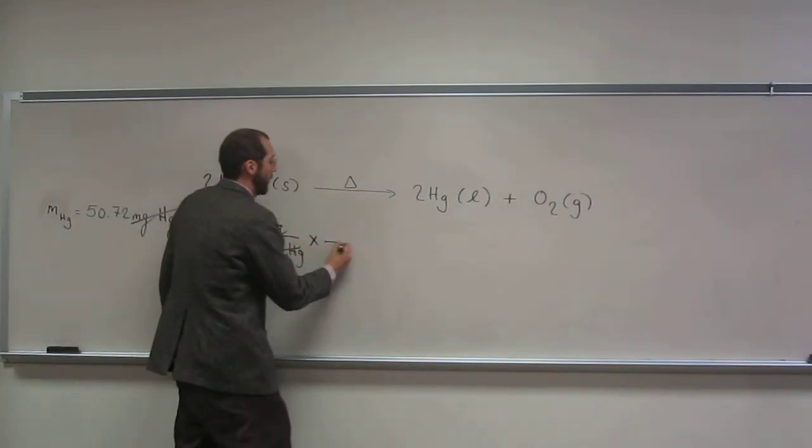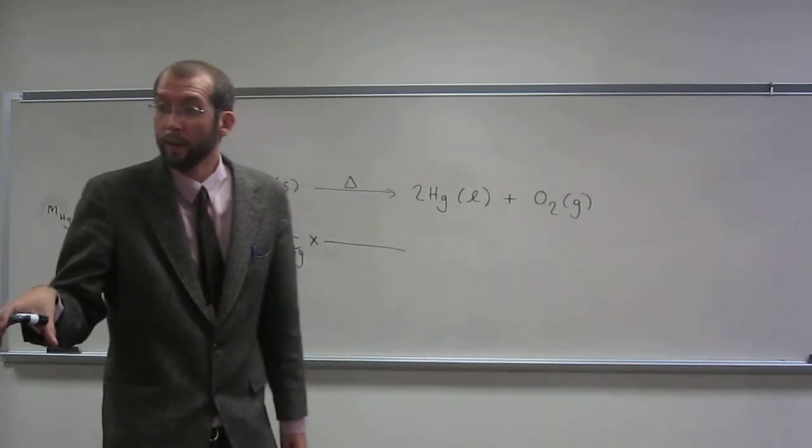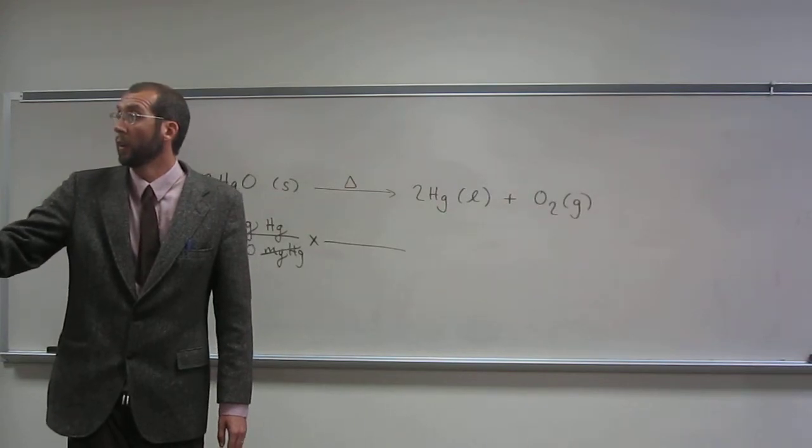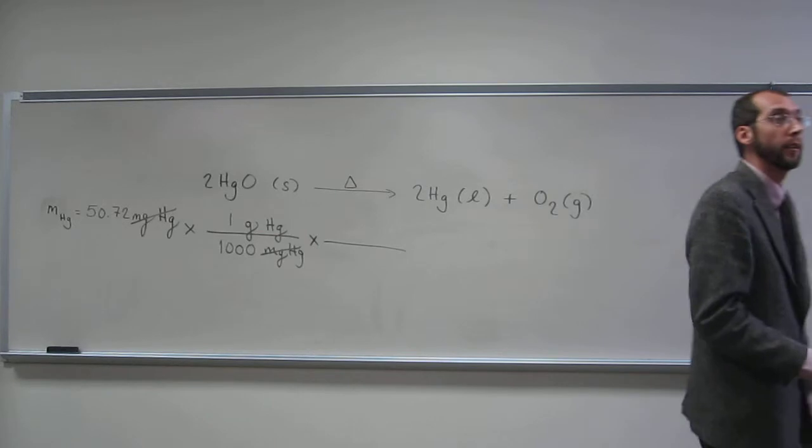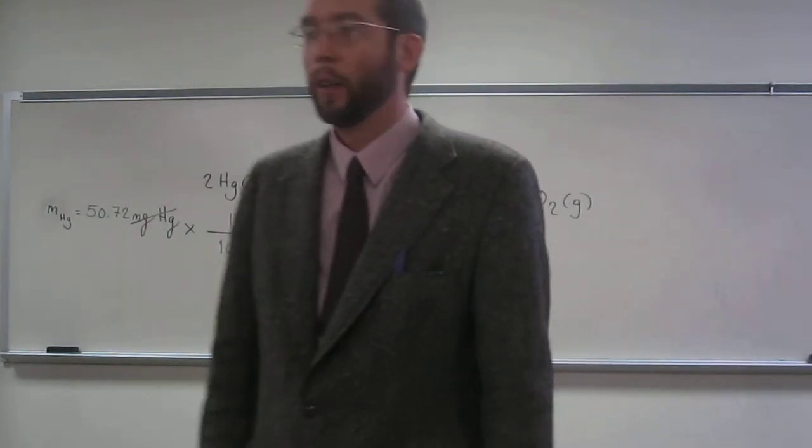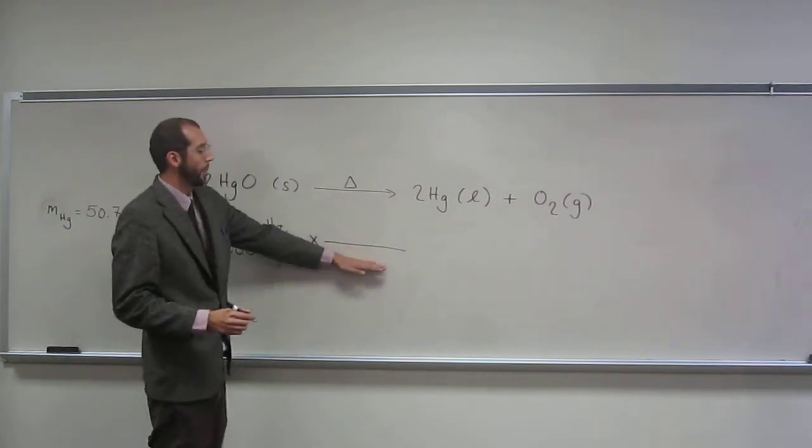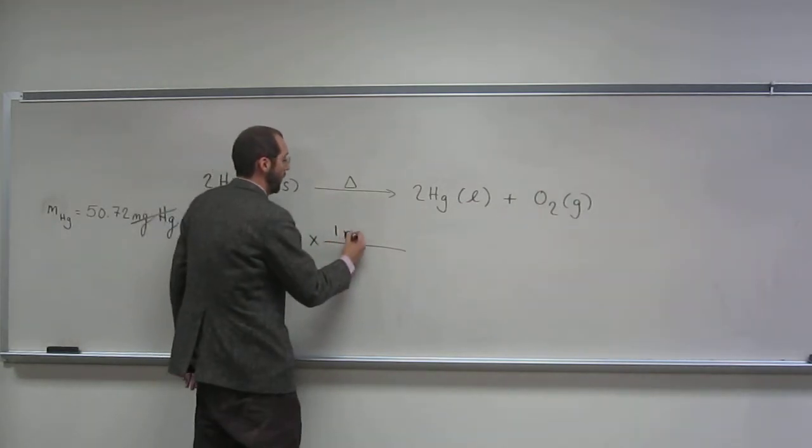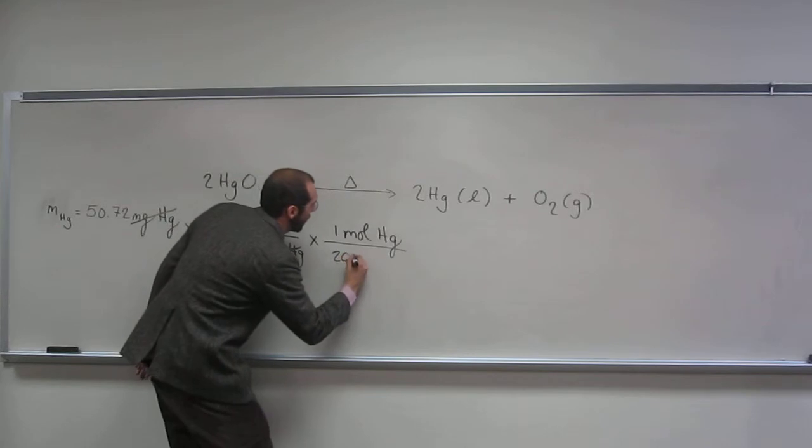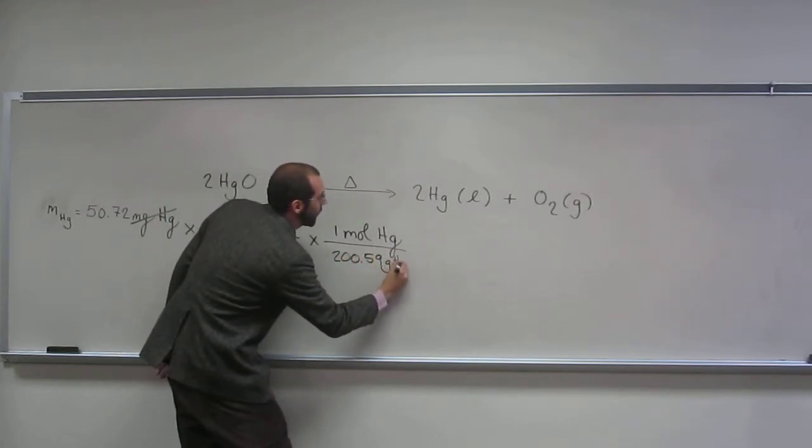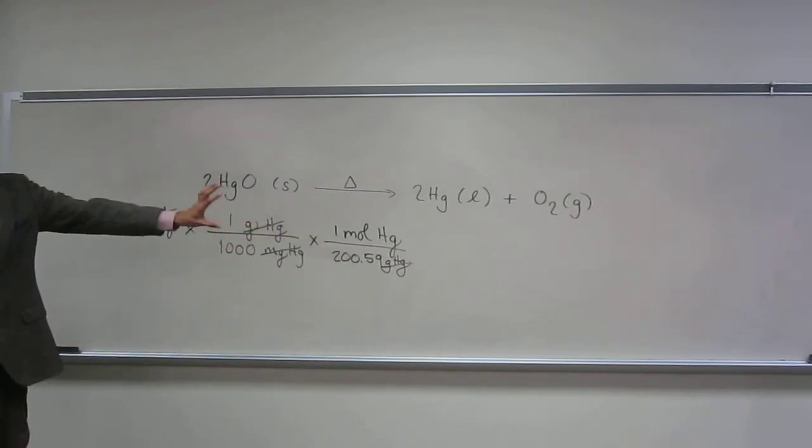So now I want to figure out the number of moles of mercury. How do I do that? The atomic weight, or the molar mass, right? The molar mass is directly what you want to find. So how will we find the molar mass of mercury? Periodic table. When we look up there, it says 200.59. So one mole of mercury on top and 200.59 grams of mercury on the bottom. Cancel, cancel. So what are our units now? Moles of mercury.